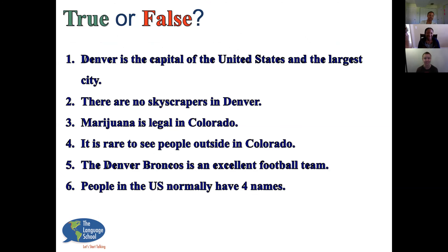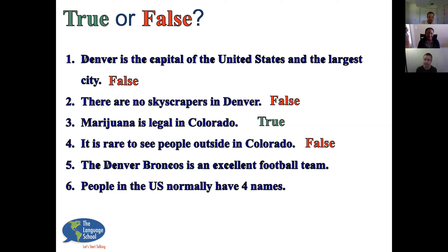Now the quiz — true or false. Francis, Denver is the capital of the United States and the largest city. False — it's the capital of Colorado and the largest city in Colorado. Megan, there are no skyscrapers in Denver. False — there are plenty of skyscrapers here. Francis, marijuana is legal in Colorado. True. Megan, it is rare to see people outside in Colorado. False — people love to be outside in Colorado. Francis, the Denver Broncos is an excellent football team. True — well, it depends on the year. Megan, people in the U.S. normally have four names. False — people normally have three names.